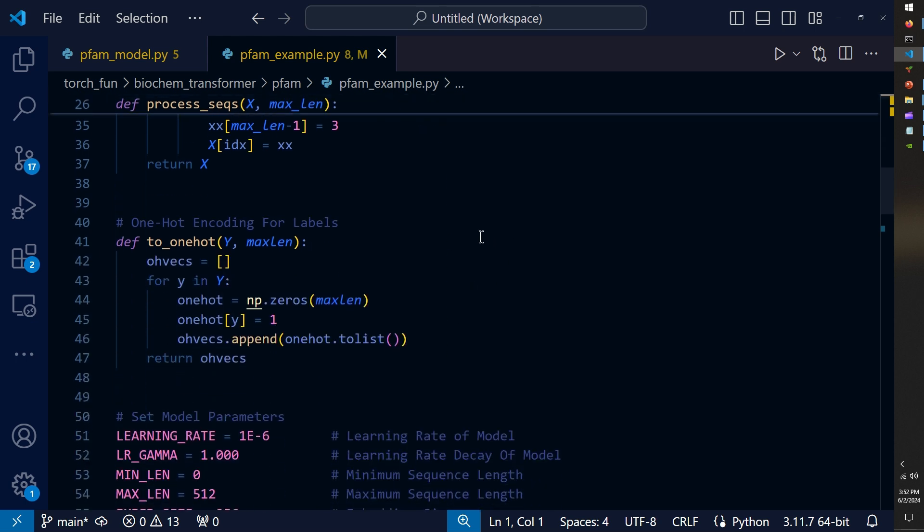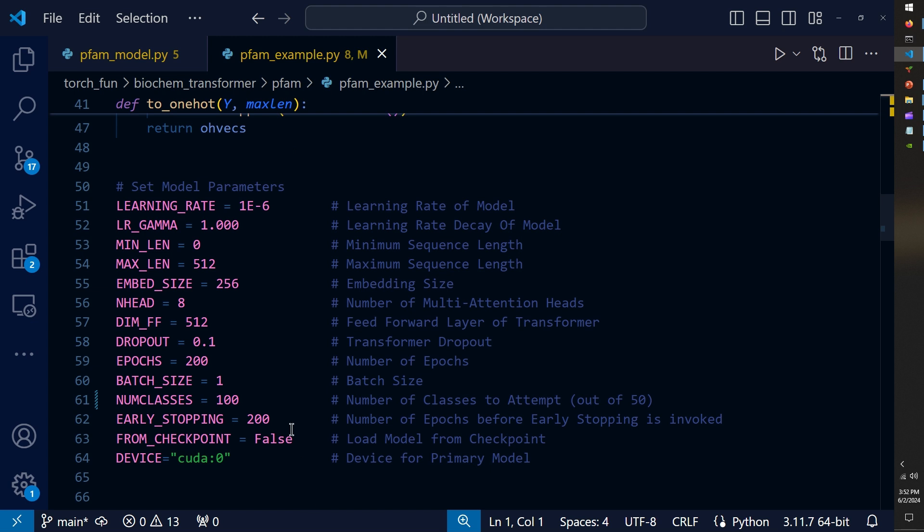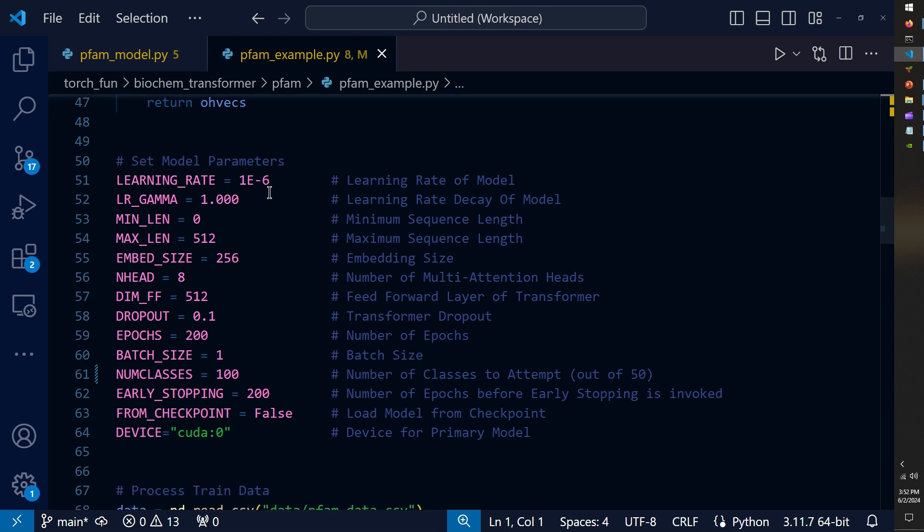Finally, I defined a one-hot encoding function to convert our labels to one-hot encodings of the labels for the softmax loss comparison. After defining our preprocessing functions, I set all of my hyperparameters in this block of the script, and these are as set for my last 100 class run.